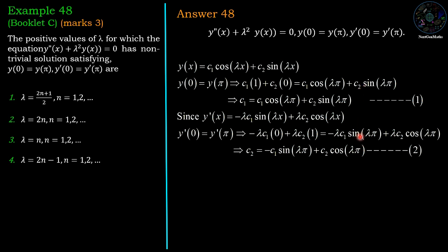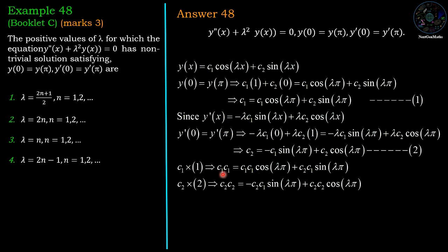From these two equations we eliminate sin(λπ) or cos(λπ). Multiplying the first equation by c₁ and the second by c₂ gives: c₁² = c₁cos(λπ)·c₁ + c₂sin(λπ)·c₁, and c₂² = −c₂sin(λπ)·c₂ + c₂cos(λπ)·c₂. Adding both equations: c₁² + c₂² = (c₁² + c₂²)cos(λπ).